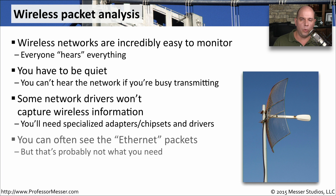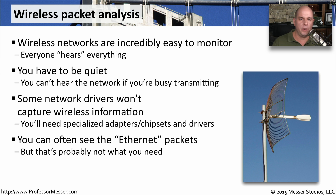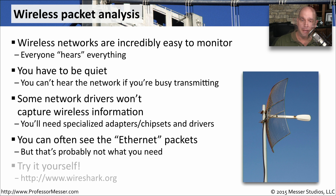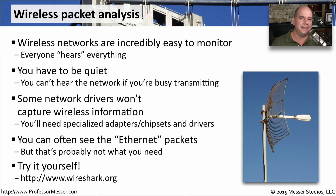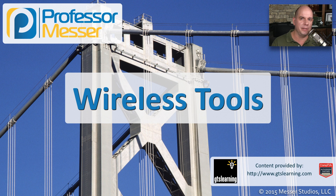Once you connect to the wireless network, you may see ethernet packets but not the wireless protocols — in that case, you may be using the wrong chipsets. You can try different chipsets with different adapters to find the one that works best with your software. The easiest thing to do is try it yourself: download the latest version of Wireshark from wireshark.org and try it with your wireless adapter. You may be surprised at just how much information you're able to see.